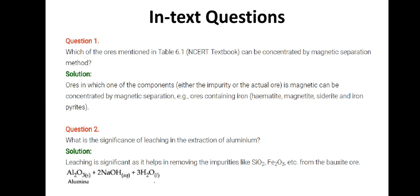Next, what is the significance of leaching in the extraction of aluminum? Leaching is significant as it helps in removing the impurities like SiO2, Fe2O3 etc. from the bauxite ore through the leaching process.